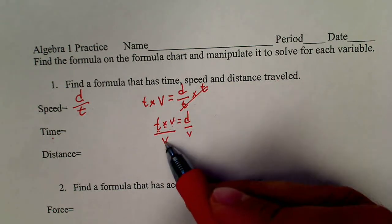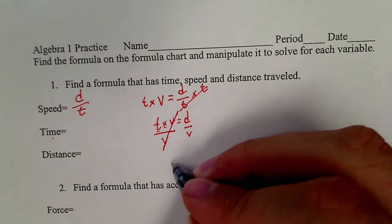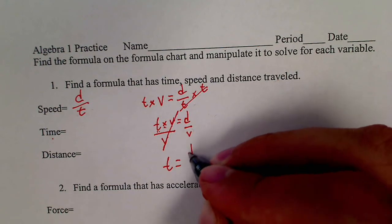So, we're doing the opposite of multiplied by V or divide by V. Now, we have a V on top, a V on bottom, V divided by V. That cancels out. Now, when we rewrite it, T equals D over V.